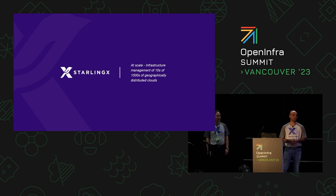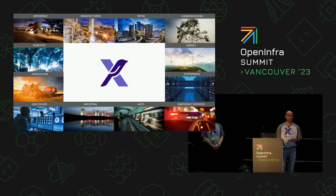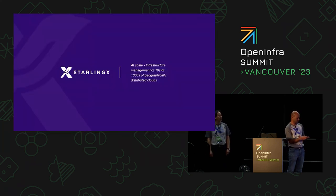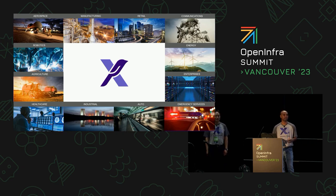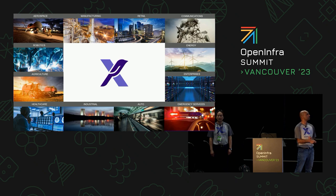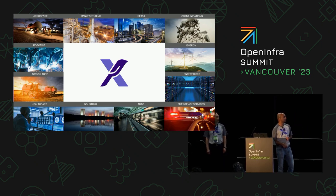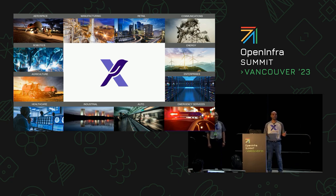StarlingX is an infrastructure software stack predominantly used for cloud-native workloads. It's a generic platform capable of supporting multiple domains. Communications and telecommunications is the primary domain where StarlingX is deployed in production at scale. As part of this production environment, we have a lot of learnings and experiences, and we've implemented quite a bit of software enhancements to make the software highly scalable. The solution is also suitable for energy, enterprises, emergency services, automotive, industrial, healthcare, agriculture, robotics, aerospace, manufacturing, and retail.